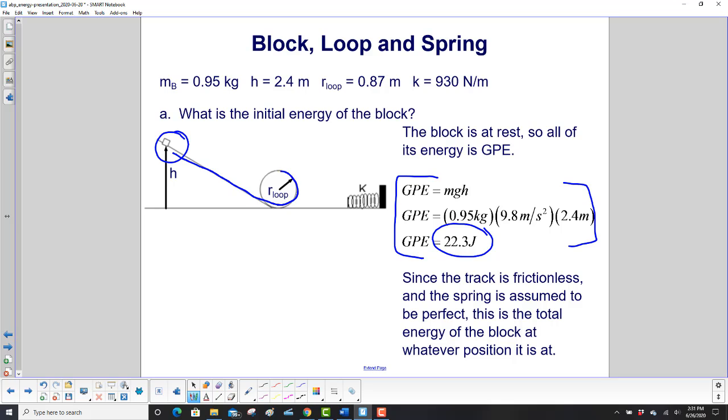Now, since this entire track is frictionless and the spring is assumed to be a perfect spring, the total energy at any single point in this little adventure is the same.